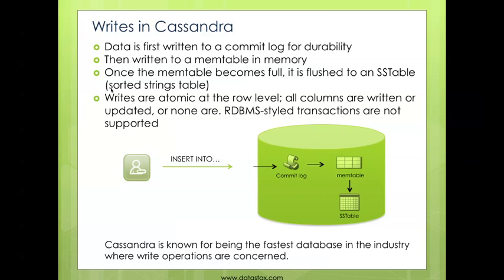Cassandra then writes data to an in-memory structure called a mem table. When that mem table becomes full, it flushes it to what's called an SS table — a sorted strings table on disk. Now even though Cassandra doesn't offer relational database-style transactions with commits and rollbacks, writes are atomic at the row level. This means all columns are written to or updated, or none are.